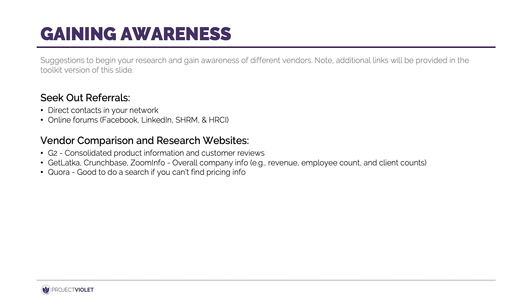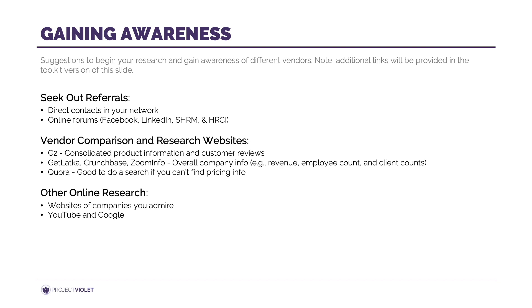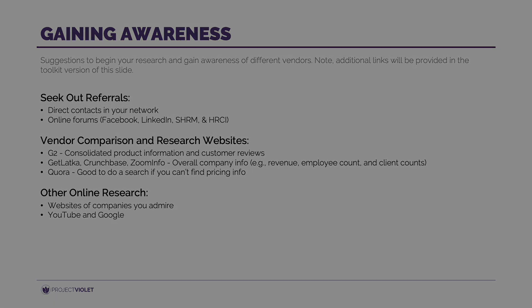Check out some comparison websites — G2 is a really good one that categorizes systems well and compiles a lot of top-level information on vendors. You can also see what companies you admire are using. In the talent acquisition example, visit their career pages; if they're using a vendor for this function, you may be able to see that vendor name at the bottom of their job postings. Of course, a simple Google or YouTube search will also provide some insights on companies you may not have been aware of.